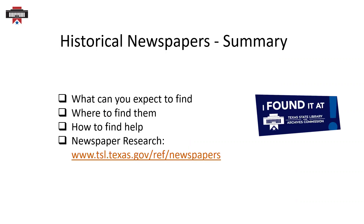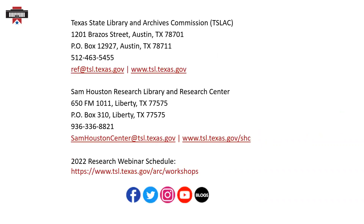In summary, we covered what is available in historical newspapers. Remember to include local and ethnic newspapers as part of your research strategy — where you can find print, microfilm, and online newspapers. Check with your local library, museums, or archives to see if they have newspapers more relevant to that area. And how to look for tutorials and tips by clicking on the help link for assistance inside the database or directory. Websites mentioned in this presentation are listed on the newspaper research section of our website. We hope our introduction to newspaper research has been helpful to you. For help with your research, you can contact staff here at TSLAC or the Sam Houston Center by mail, phone, or email.